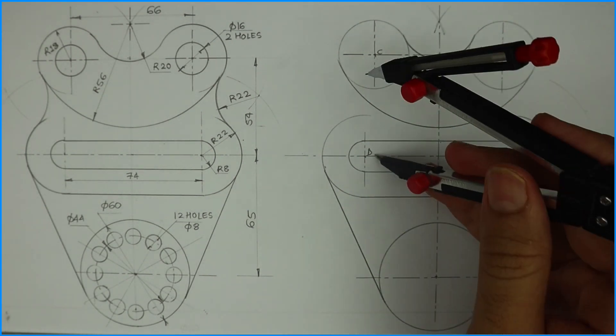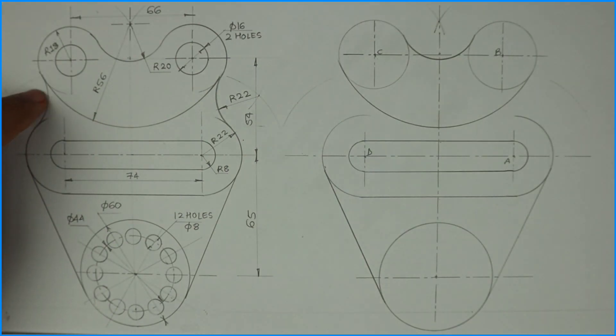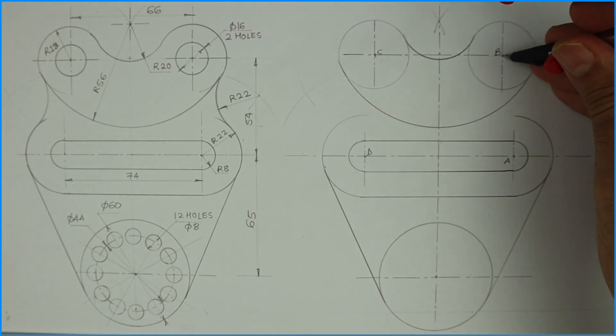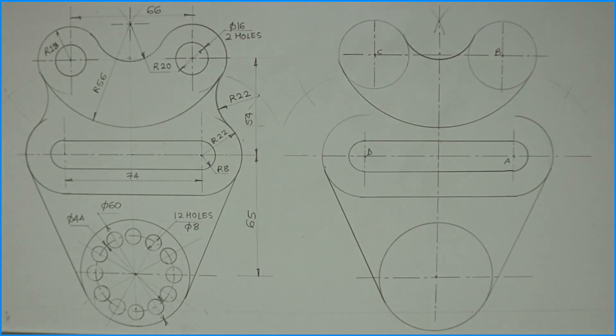So I'll take 44, 44 on both sides, and 22 plus 18 that is 40, I'll cut 40 on both sides. So I will get the center point from where I can draw radius 22.